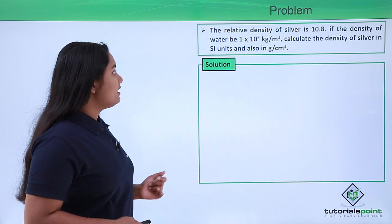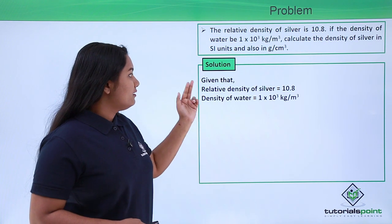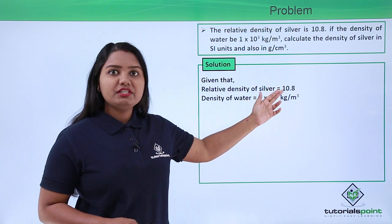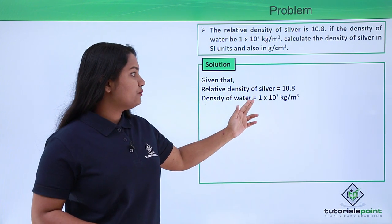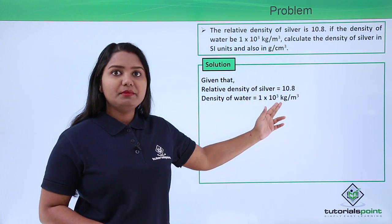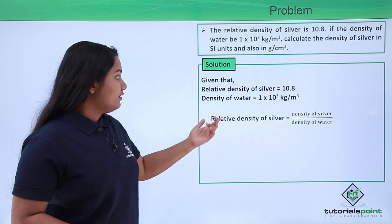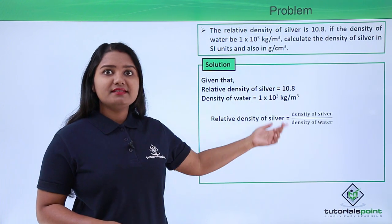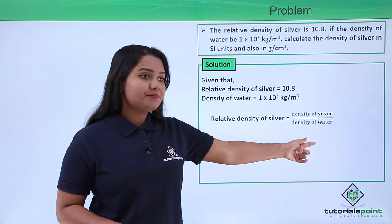First of all, let us list down whatever is given in the question. The relative density of silver is given to be 10.8, and the density of water is given to be 1 × 10³ kg per meter cube. Now, the relative density of silver — as we know the formula — is the density of silver divided by the density of water.